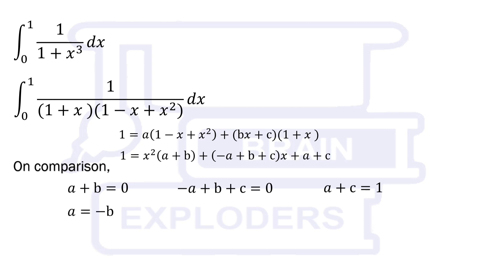From the first equation, we have a equals minus b. Substitute a with minus b in the second equation. We get c equals minus 2b. Substitute a and c with minus b and minus 2b.